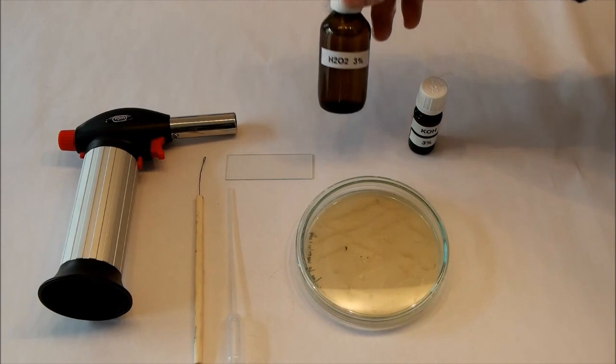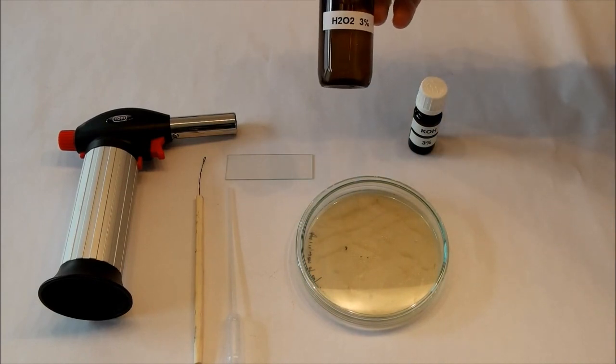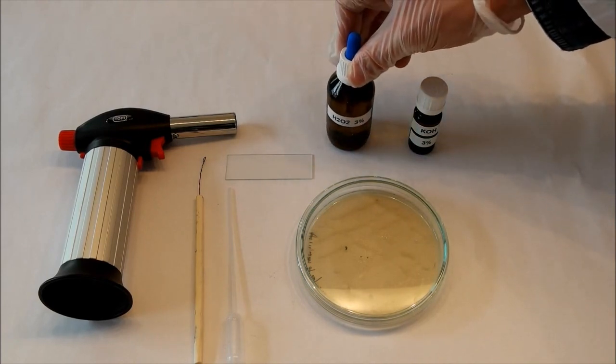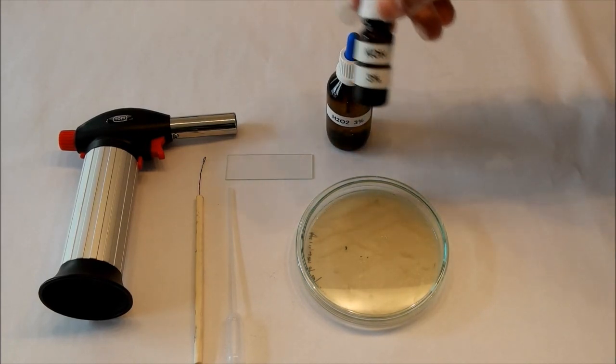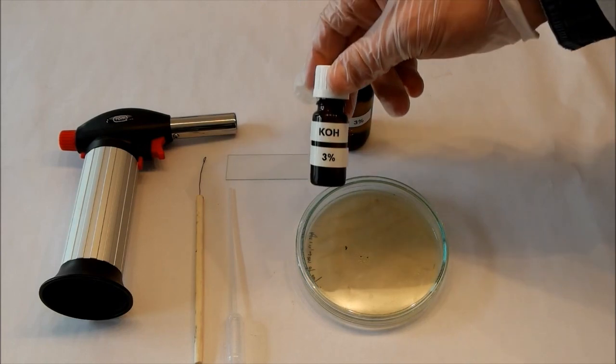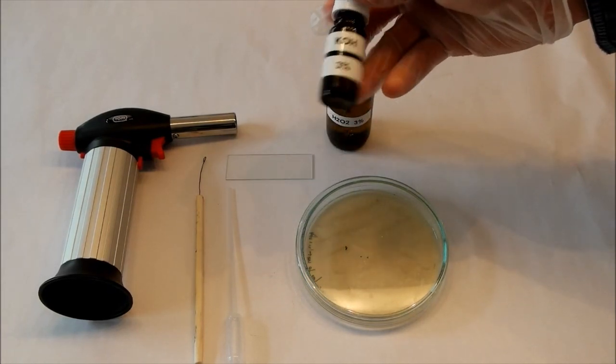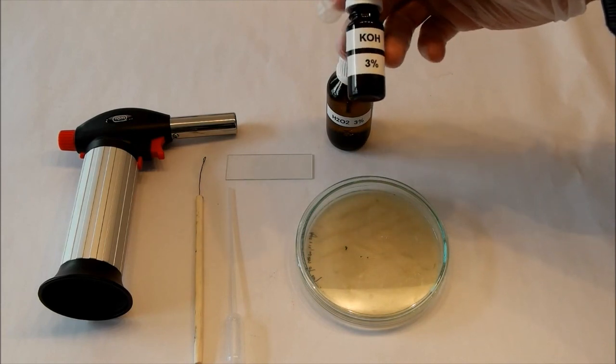The first one is a catalase test. For that you need a 3% solution of hydrogen peroxide, and the other one is the potassium hydroxide preparation, for which we use a 3% solution of potassium hydroxide too.